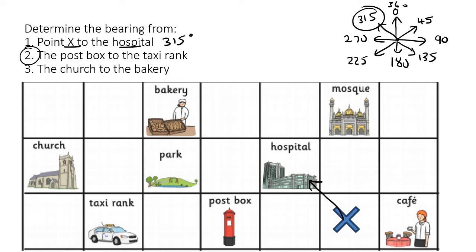Number two, the post box to the taxi rank. So you're going from the post box to the taxi rank at a bearing of 270 degrees.